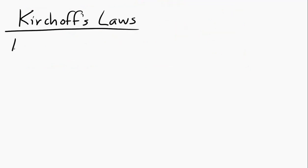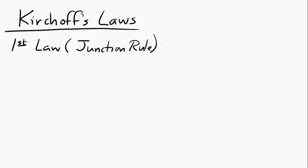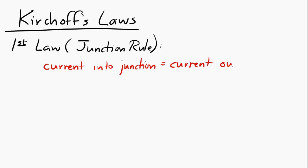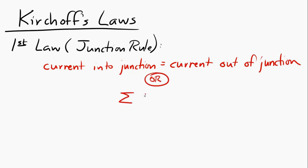The first law, or the junction rule, states that the current going into a junction has to equal the current coming out of a junction. Another way to say that is that the sum of all the currents at a junction has to equal zero. A junction is simply a point where wires come together.